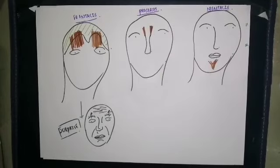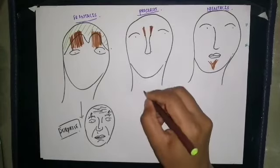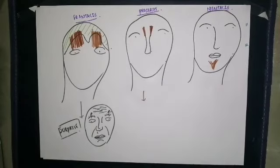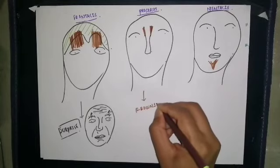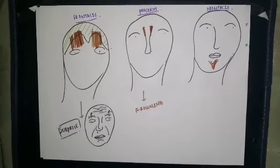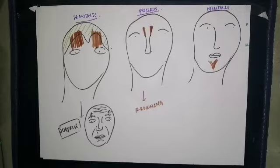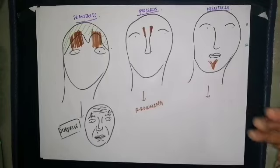The procerus is a small pyramidal muscle originating from parts of the nasal bone, which merges with the frontalis muscle superiorly. Along with the corrugator supercilii, the procerus helps in making the expression of frowning.